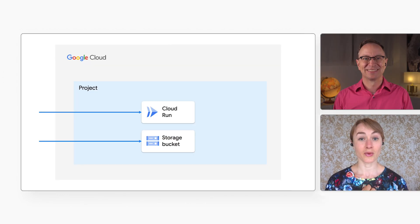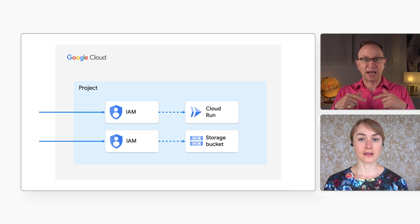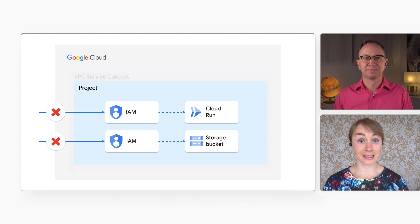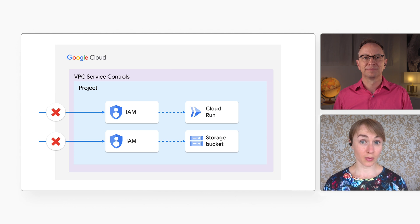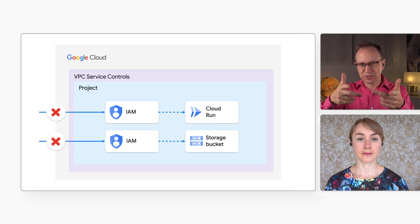Wow, that's a lot. I can imagine you get many questions about security. Yeah, I do. One of the most common questions is how to lock down access to Cloud Run services, storage buckets, databases, and so on. You can use Identity and Access Management, or IAM, for that, right? That's right. But if you already know that you will only access these services and buckets from within the project, you can increase security by blocking access from everywhere else.